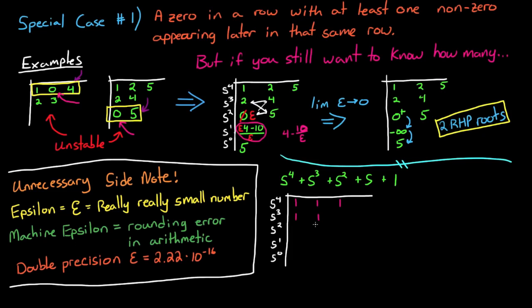But now you can see that in the third row, the first column is a 0. And the second column is a 1. And this satisfies our condition for the special case. And it also states that this system is unstable.